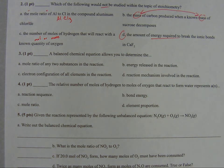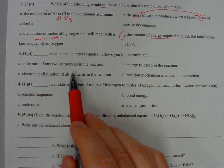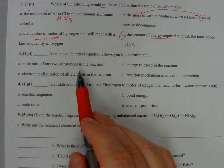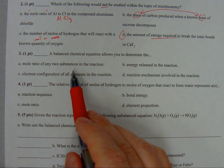Number three, a balanced chemical equation allows you to determine the mole ratio of any two substances in the reaction. That sounds pretty good to start, but I'm going to read through the other options just to make sure.